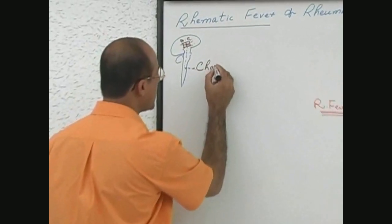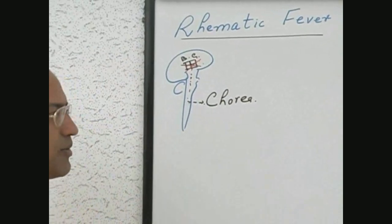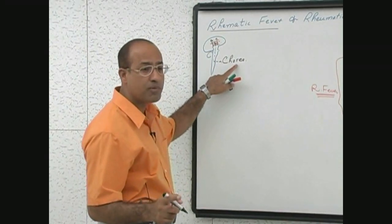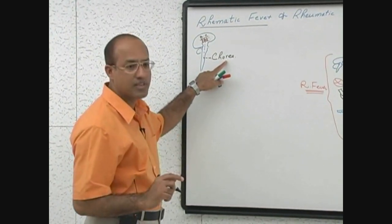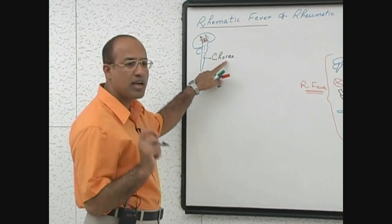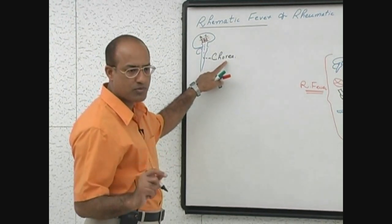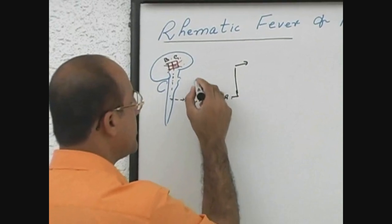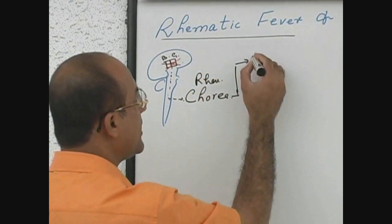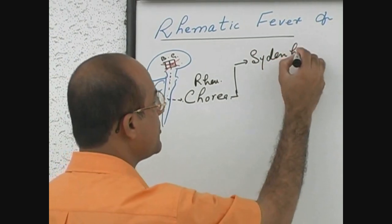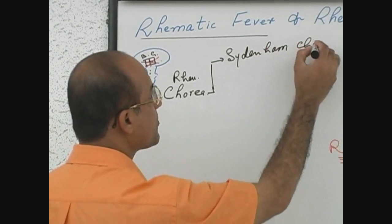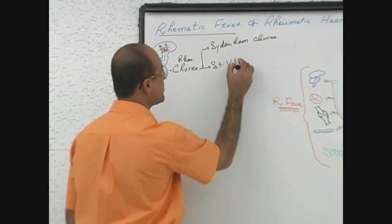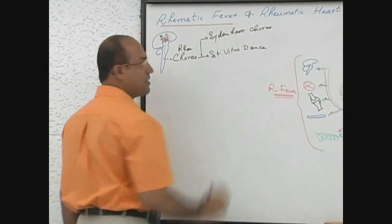What are they called? Chorea. This type of chorea, which develops as a part of rheumatic fever, usually develops during the fever, or in some patients a few months after the fever. This chorea is also called rheumatic chorea, Sydenham's chorea, or Saint Vitus dance — you can call it whatever you prefer.